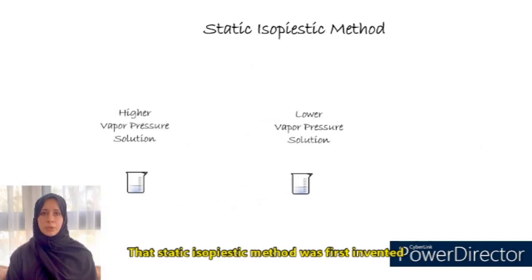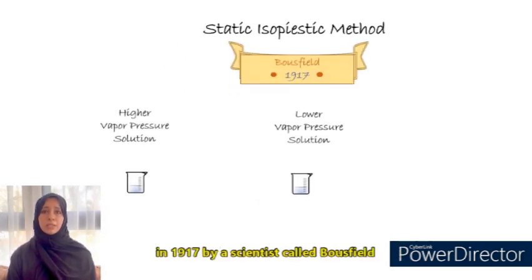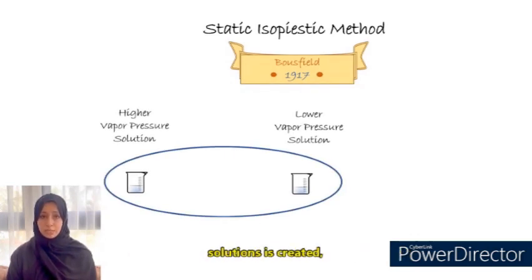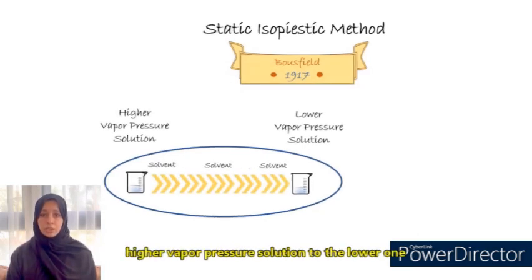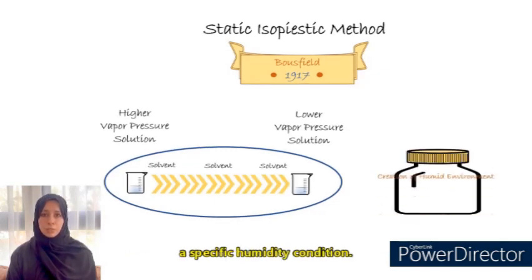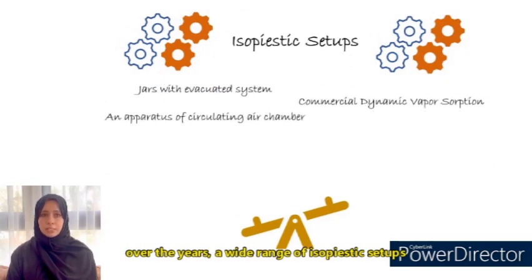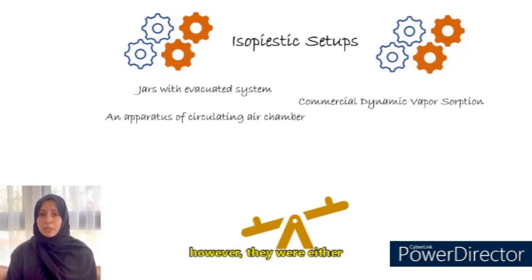The static isopiestic method was first invented in 1917 by a scientist called Bosfield. In this experiment, a well-contained environment that contains higher and lower vapor pressure solutions is created. Solvent travels from higher vapor pressure solution to the lower one, thus samples will be subjected to a specific humidity condition. Over the years, a wide range of isopiestic setups with improved designs were reported; however, they were either complicated in setup or high in cost.